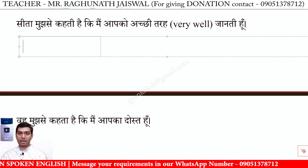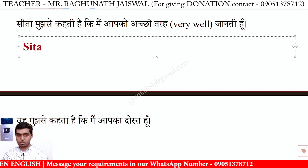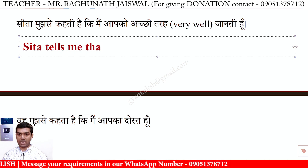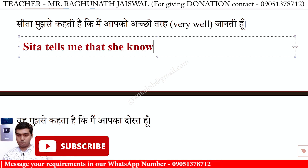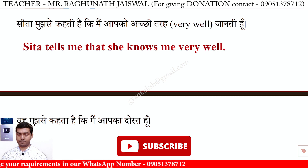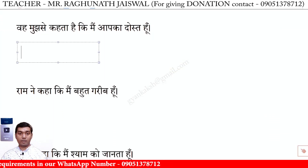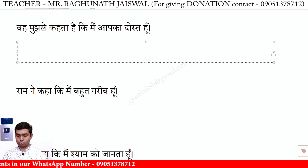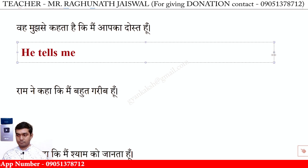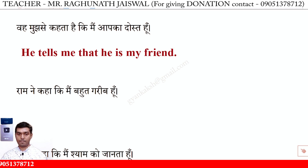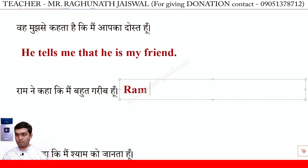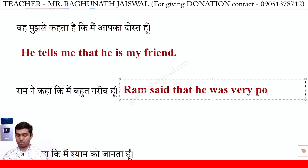सीता मुझसे कहती है कि मैं आपको अच्छी तरह जानती हूँ — Sita tells me that she knows me very well. वह मुझसे कहता है कि मैं आपका दोस्त हूँ — He tells me that he is my friend. राम ने कहा कि मैं बहुत गरीब हूँ — Ram said that he was very poor.